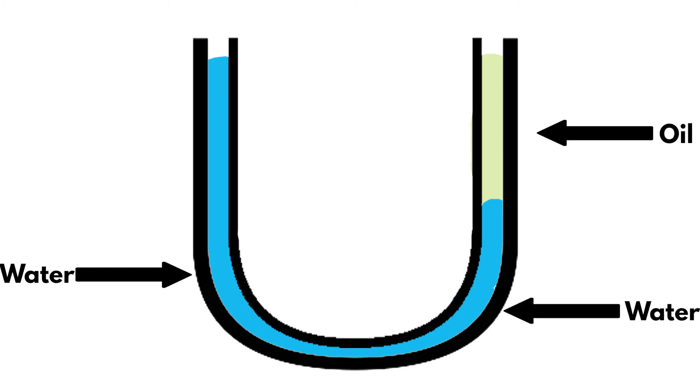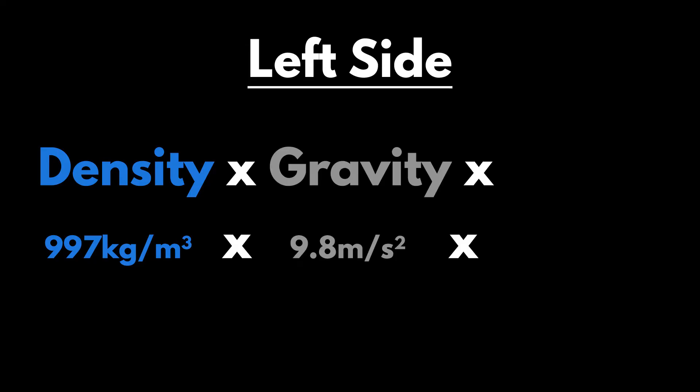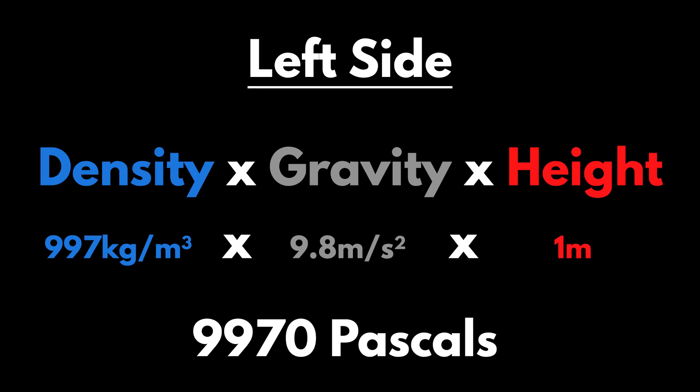Here is a closed system tube filled with water and oil. On the left side contains all water, whereas the right hand side contains half oil and half water. We can do the math on both sides of the system to determine each of the fluid pressures. Assuming the height is 1 meter, the left side's pressure is the density of water times gravity times the height. This gives us a fluid pressure of 9970.6 Pa.